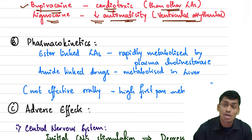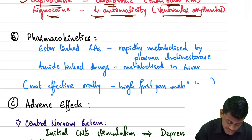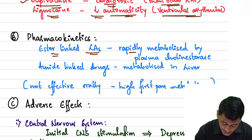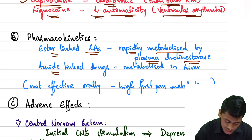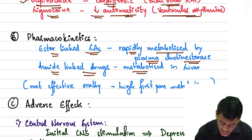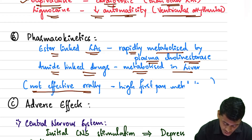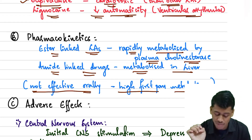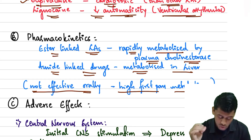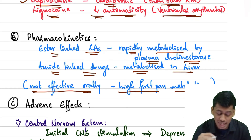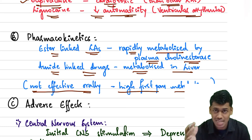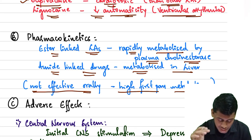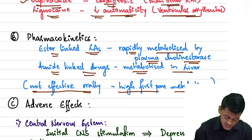Moving on to the pharmacokinetics of local anesthetics: the ester-linked local anesthetics are rapidly metabolized by plasma cholinesterases, and the amide-linked local anesthetics are metabolized in the liver. They are not effective orally because of high first-pass metabolism.